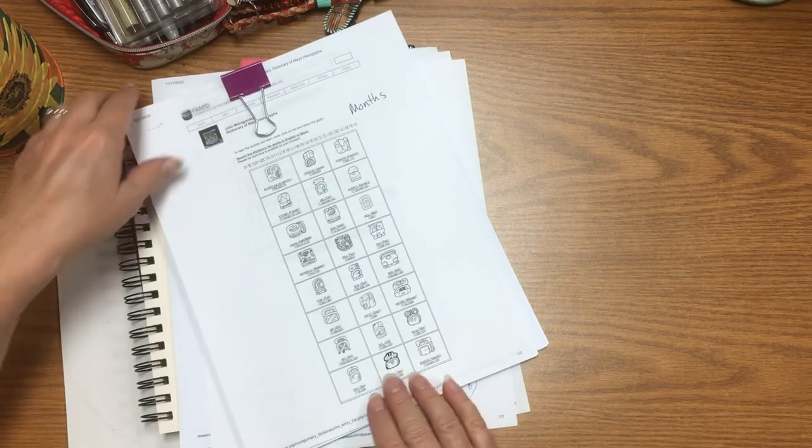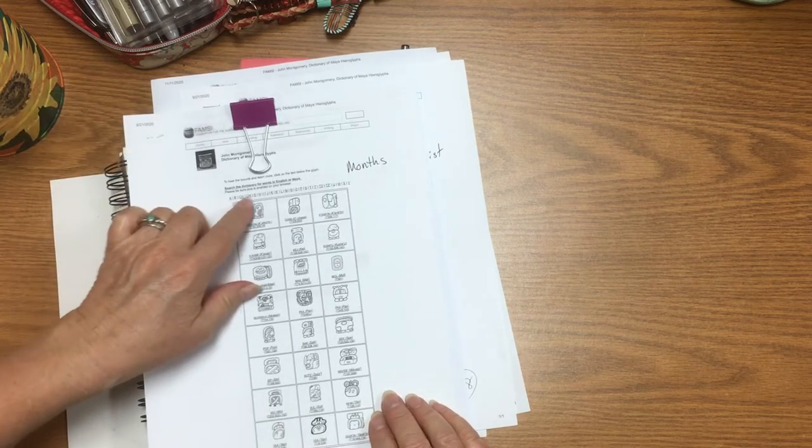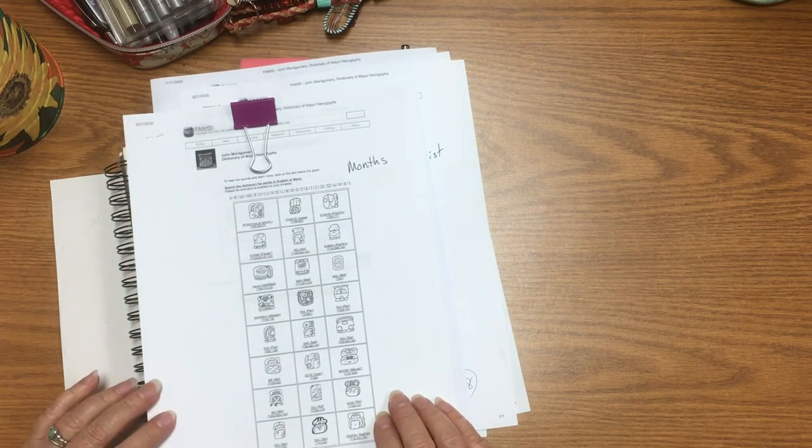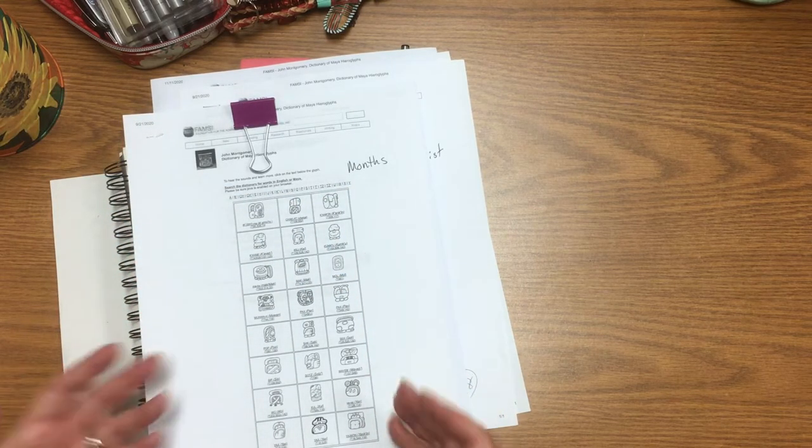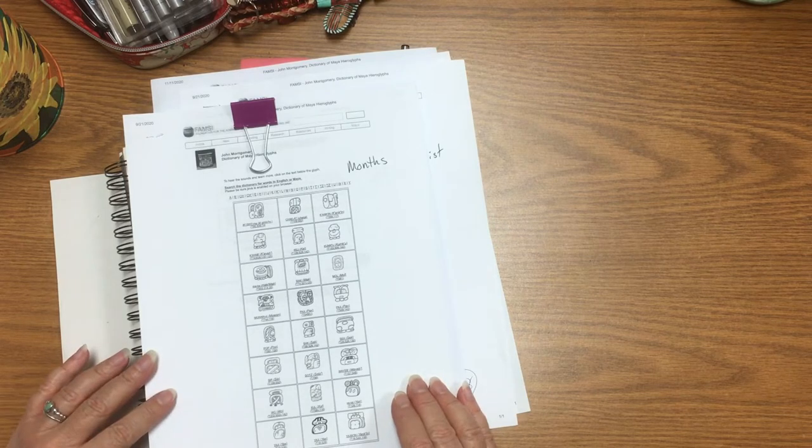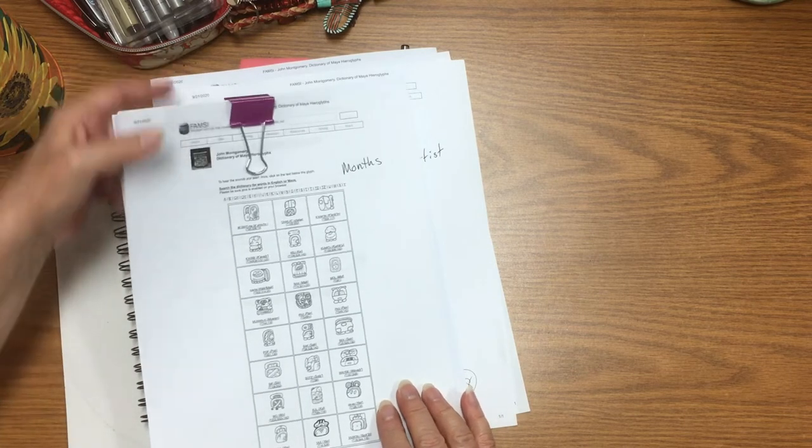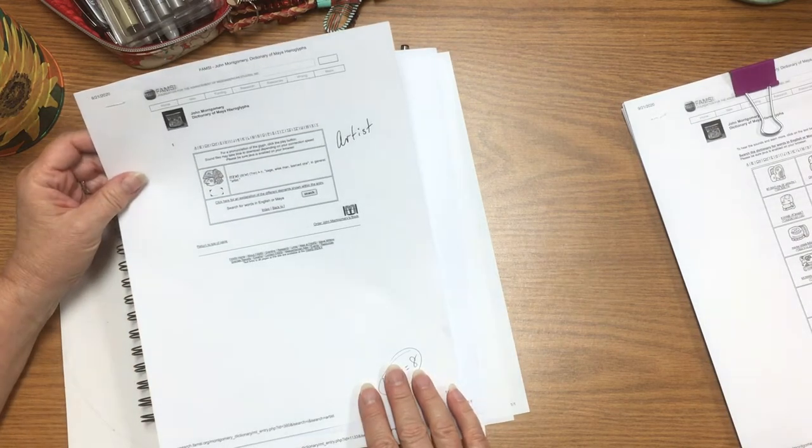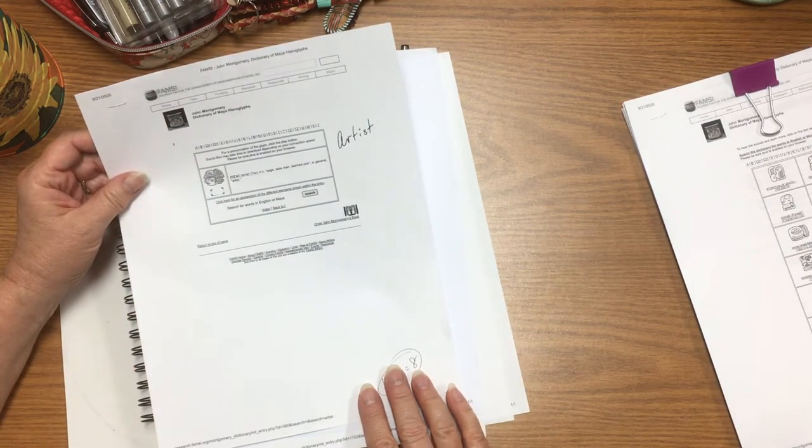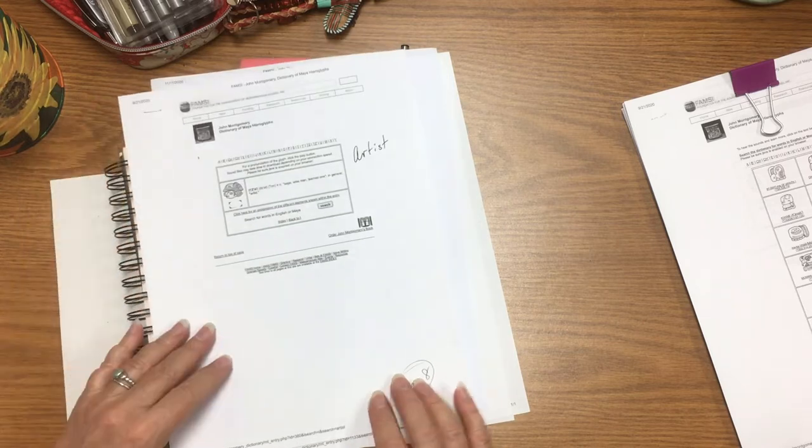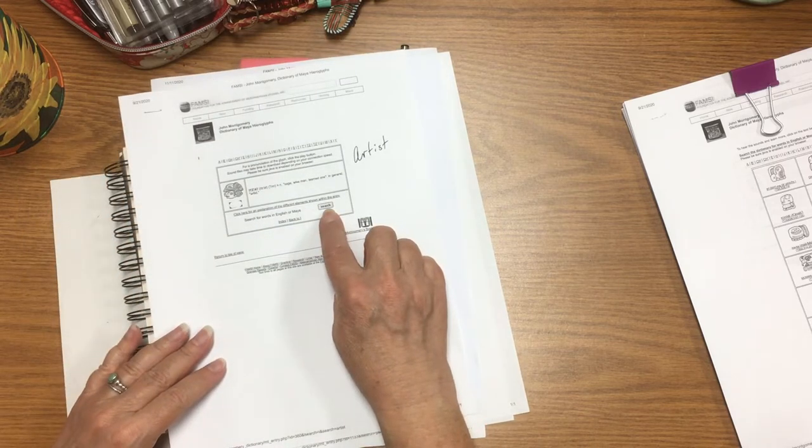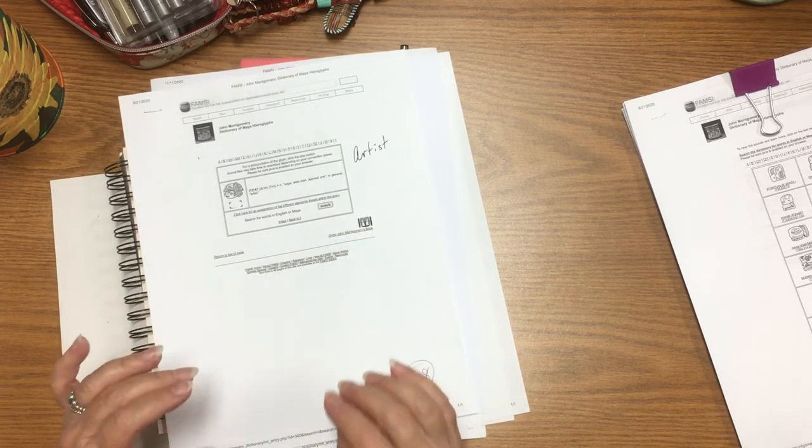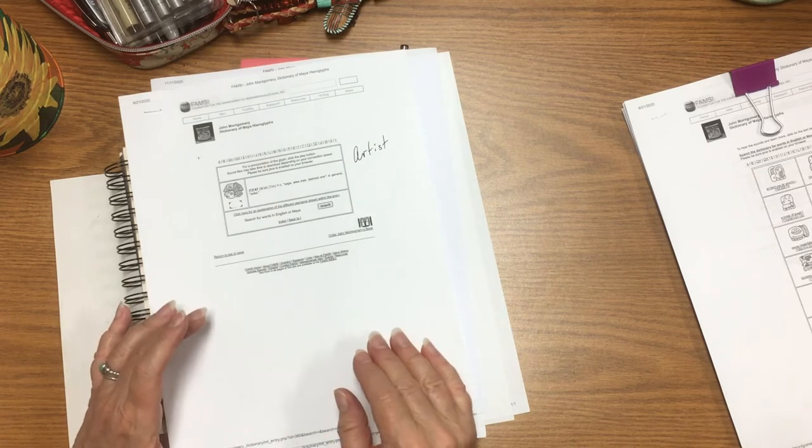It'll look something like this where you can click on any of these letters of the Maya alphabet and it will pull up a menu full of hieroglyphs. When you click on these individual hieroglyphs, then it will show you exactly what that glyph means. And if you want to, you can click in the search bar and search for specific words that have meaning to you.